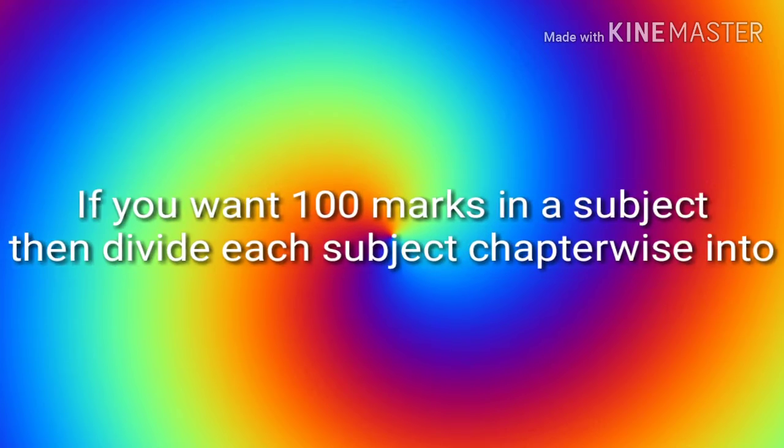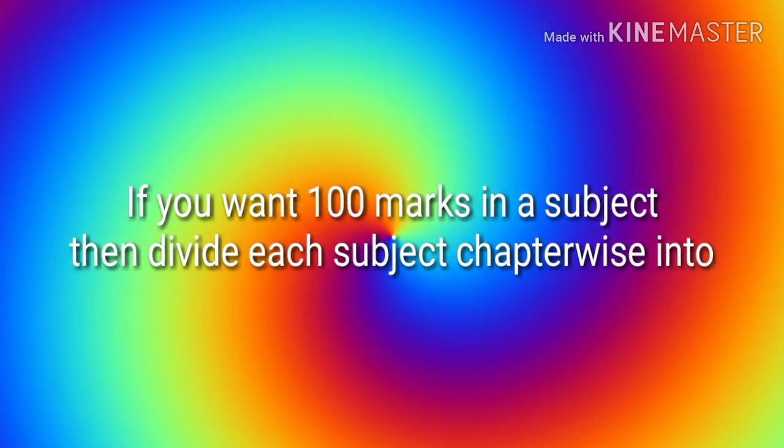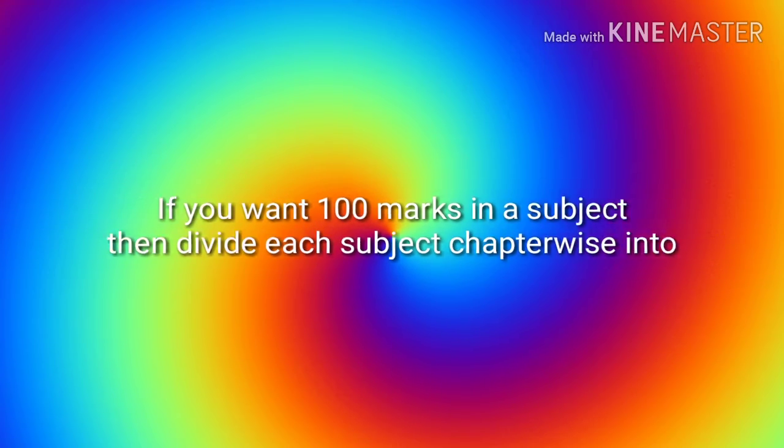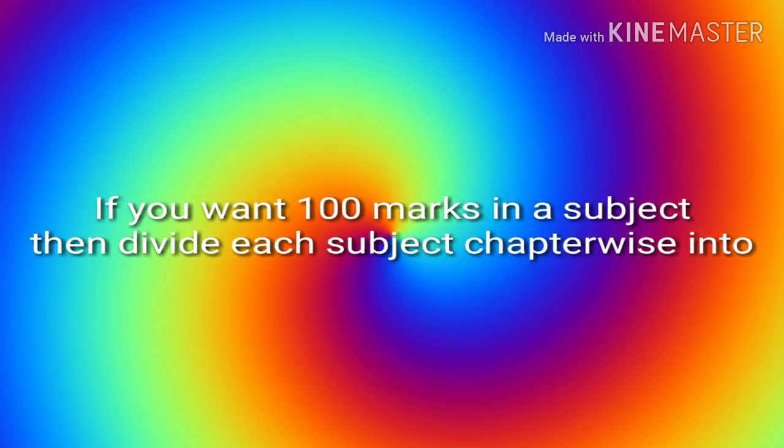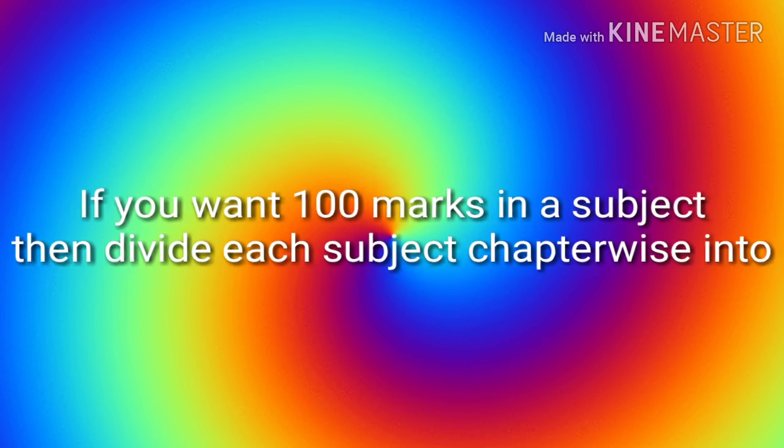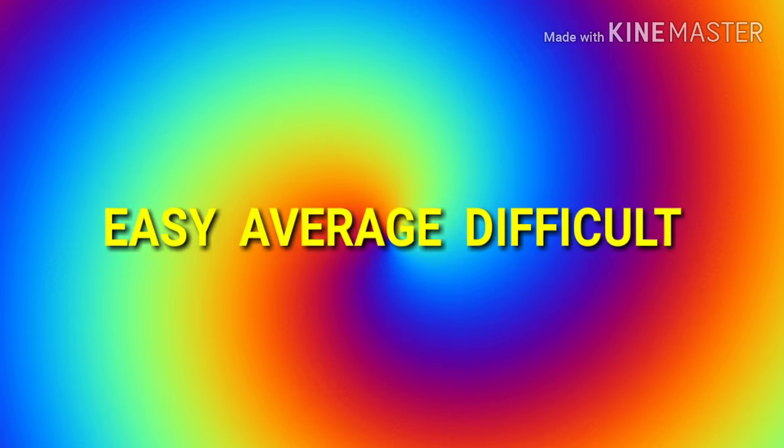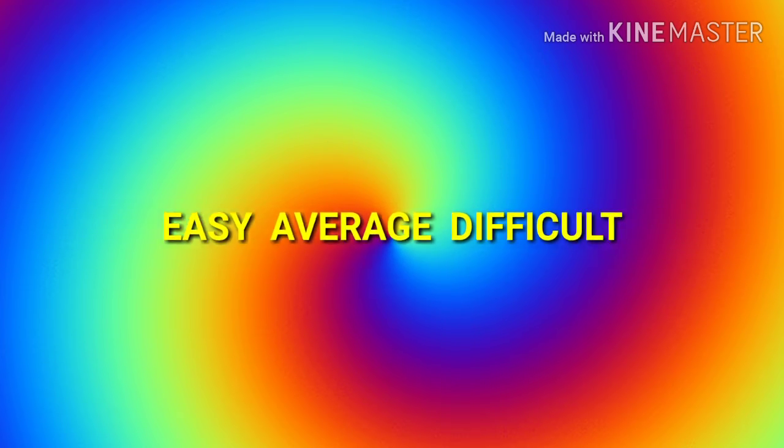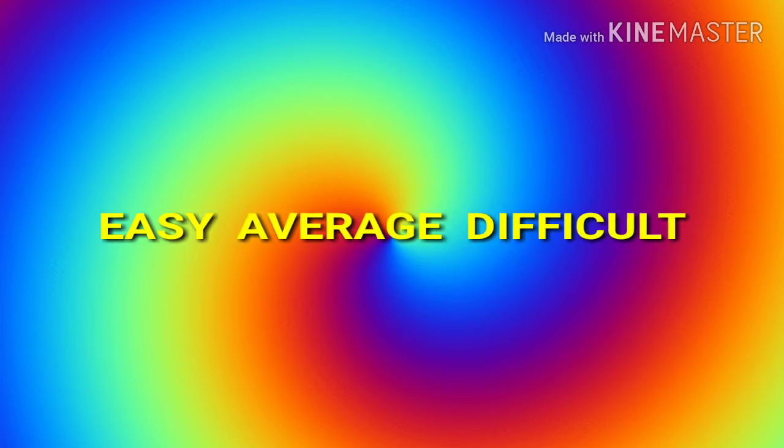If you want to get 100 in a subject, then first divide the marks into chapters into three categories: easy, average, difficult. Count how much marks is easy for you, how much marks is average for you.